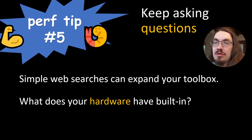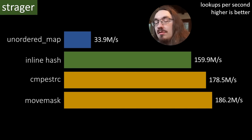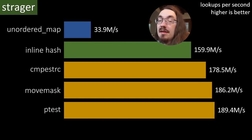Perf tip number five, keep asking questions. Simple web searches can expand your toolbox and think about what your hardware has built in and do some research. Now, while developing the CompyStirC thing, I noticed that it requires SSE 4.2, but I want my software to run on older processors where SSE 4.2 is not available. So I developed a version that works on all Intel 64-bit processors. So let's see how that one performs. So it's actually faster than CompyStirC, even though CompyStirC is dedicated at string comparisons. While developing the portable MoveMask approach, I learned about the SSE 4.1 instruction, P-Test. So let's try using that to solve a problem instead. P-Test is even faster than either CompyStirC or MoveMask. So let's stick with that.